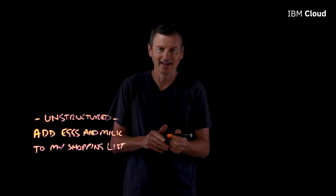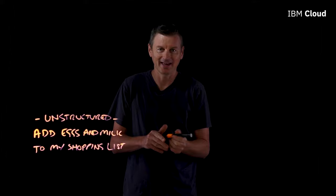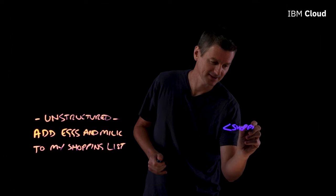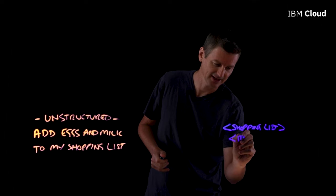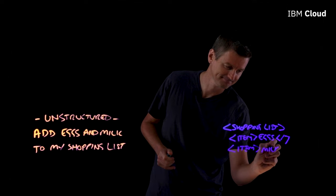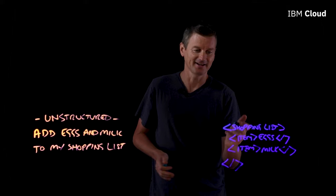So what we need to do is have a structured representation of that same information that a computer can process. That might look something a bit more like this, where we have a shopping list element and then it has sub-elements within it, like an item for eggs and an item for milk. That is an example of something that is structured.